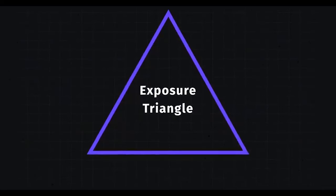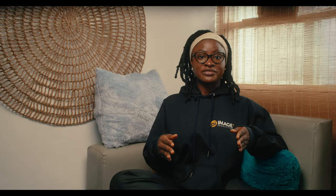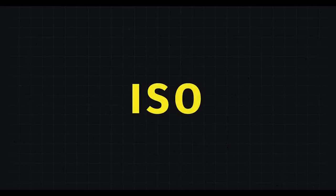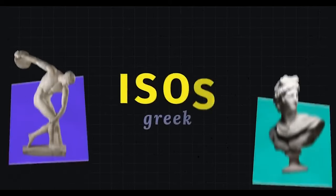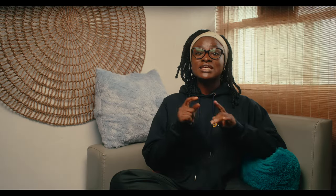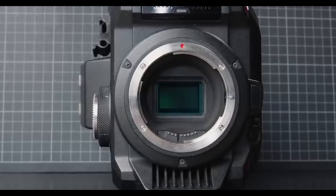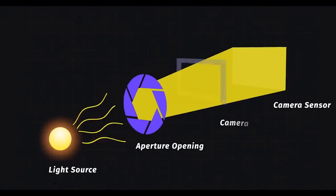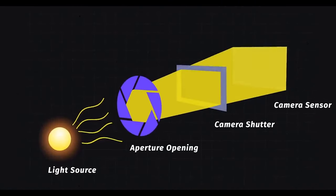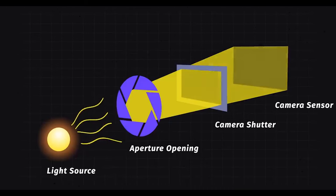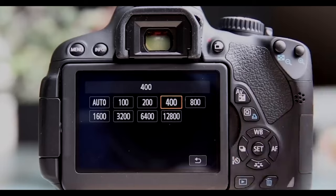Today we dive into the world of native ISO, which is one of the fundamental settings on the exposure triangle. Light plays a fundamental role in cinematography, and ISO is one of the key elements that cinematographers use to control how light affects the image captured on the big screen.